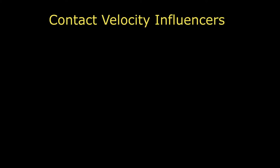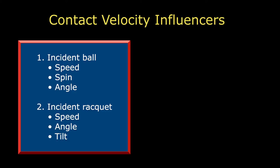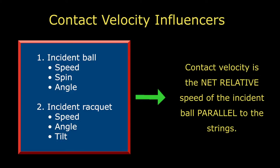Contact velocity is determined by the ball's incident speed, spin, and angle, and the racket's speed, angle, and tilt. When we mix all these variables together, and throw in, behind the scenes of course, a pinch of math, you find that contact velocity is the net relative speed of the incident ball parallel to the strings. The key words here are net relative and parallel. We already discussed what we mean by parallel as the speed across the strings.